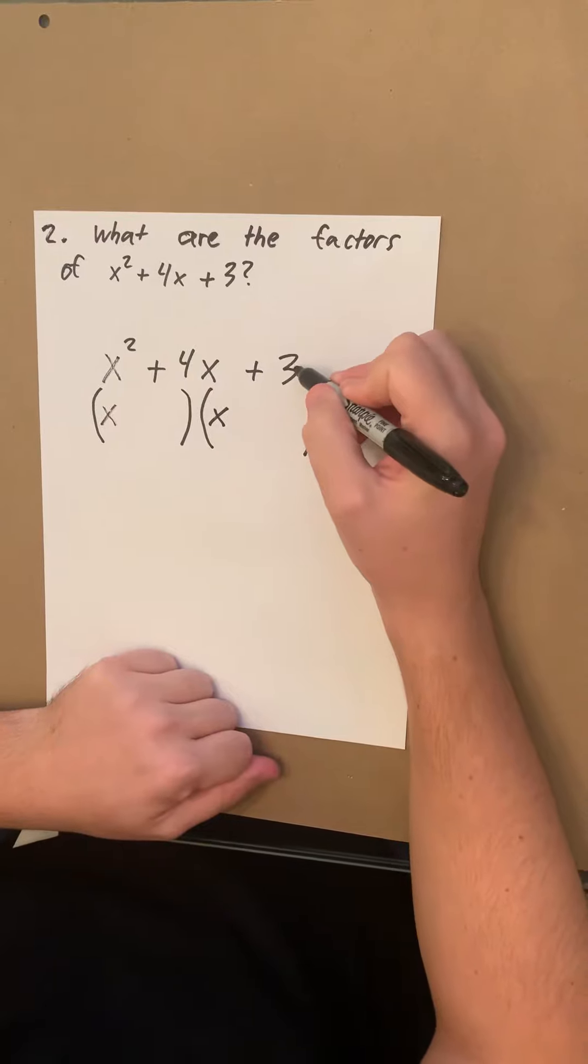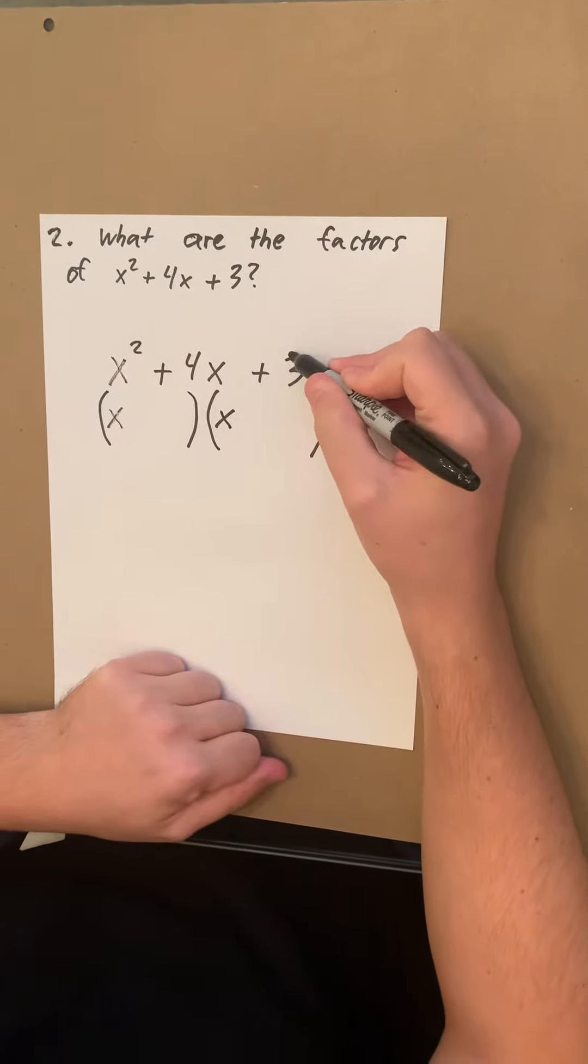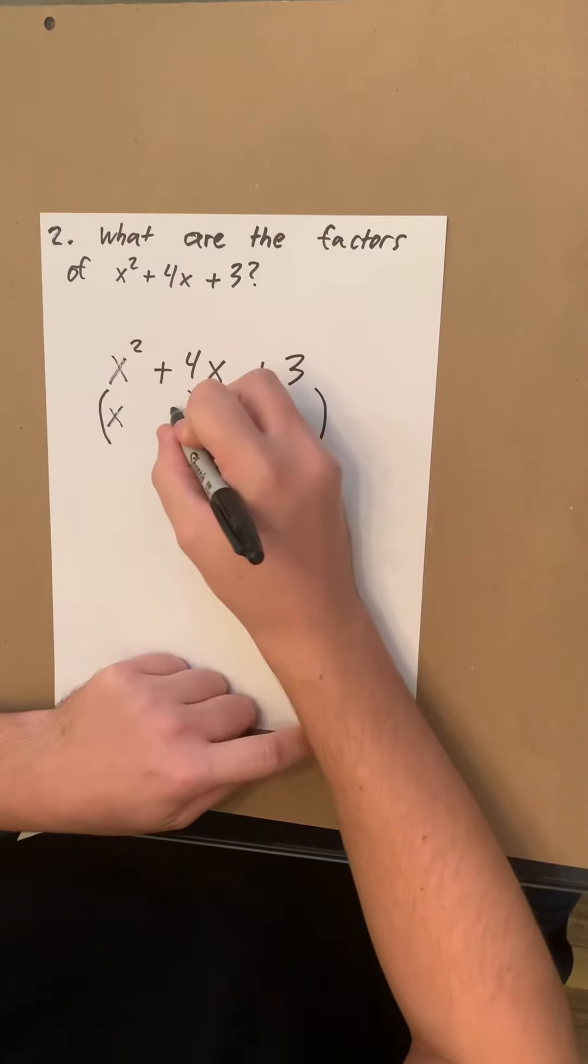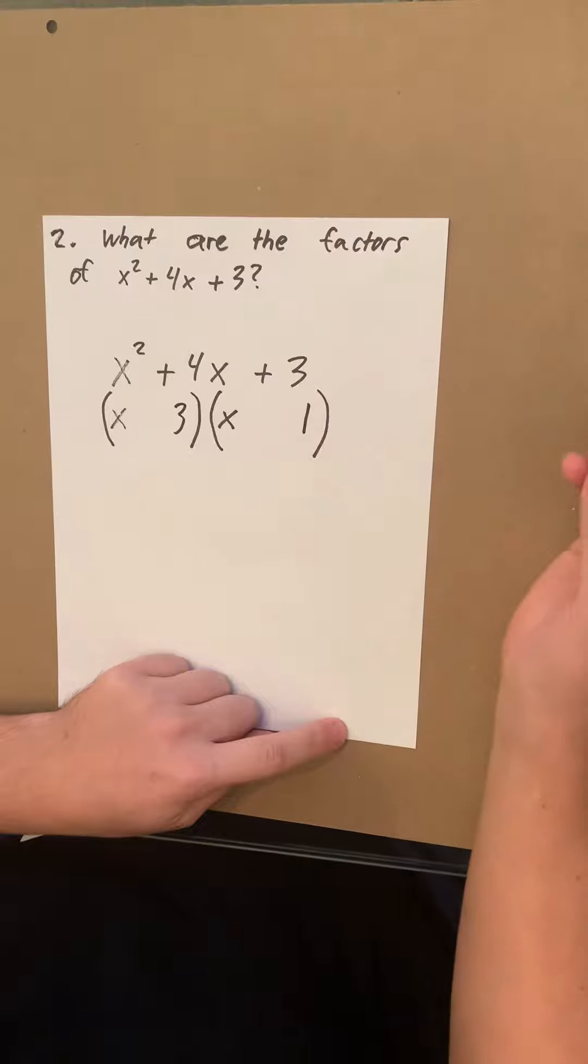Second you're gonna look at your last number which is gonna be 3. Since 3 is a prime number it can only be 3 times 1. So you're gonna put a 3 here and a 1 here.